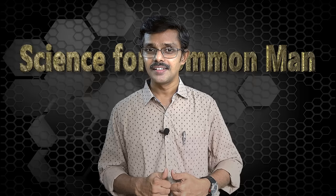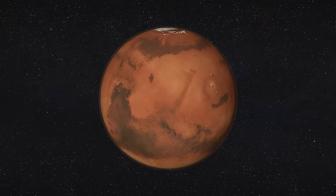Hello friends, welcome to this episode of Science for Common Man. Today's question is: billions of years ago, was Mars a planet like Earth with rivers and oceans, and if so, what happened to those water bodies?